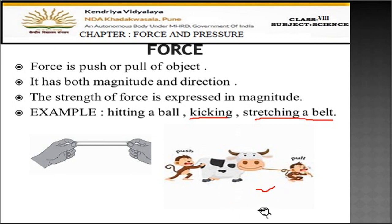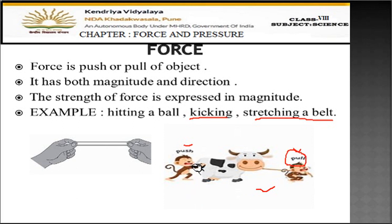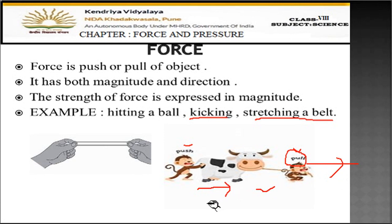In the diagram you can see both push and pull illustrated. There are two monkeys — one is pulling the rope towards himself, pulling the cow, while the second monkey is pushing the cow in a direction. So both are applying force on the cow so that it can move from its position. To stretch something, force is also applied.